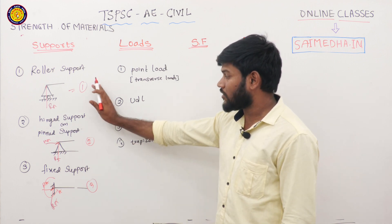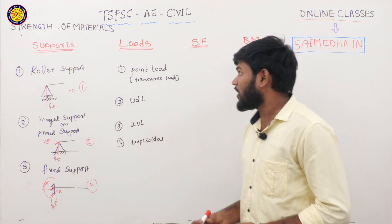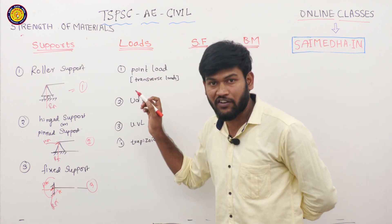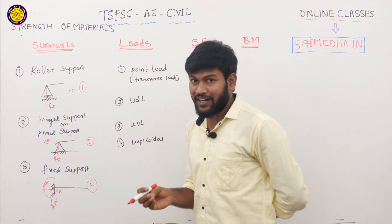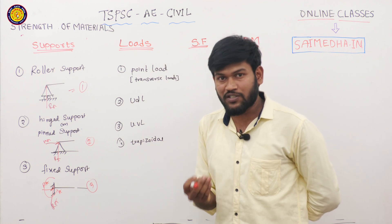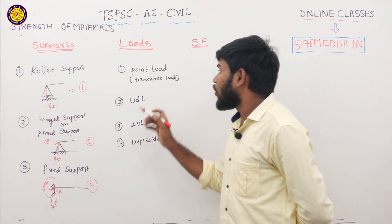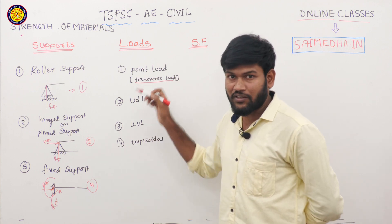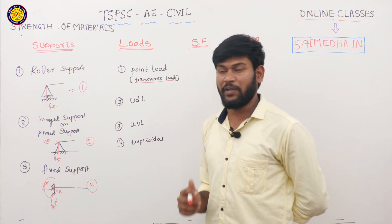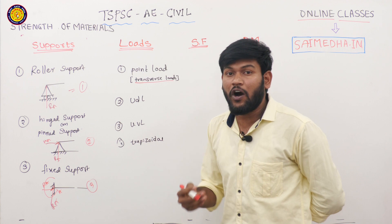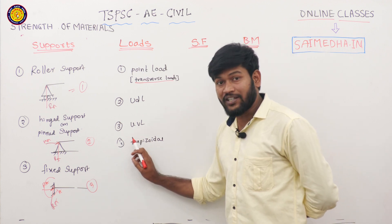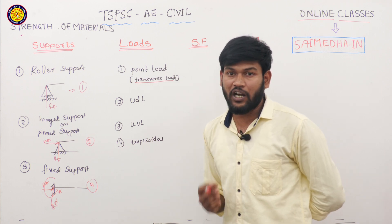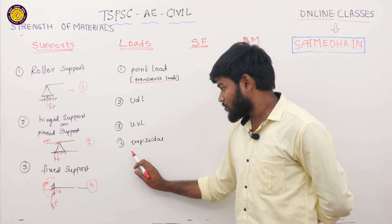These are the supports generally used in strength of materials. Coming to the loads, different types of loads are: first, point loads, also called concentrated loads. In strength of materials, shear force and bending moment concepts deal with only transverse loads, not axial loads. Transverse loads induce shear force, bending moment, and deflection in beams. Second is UDL — uniformly distributed load. Third is UVL — uniformly varying load, where variation is uniform at all cross-sections of the beam. And the last one is trapezoidal load, which is a combination of UVL and UDL.